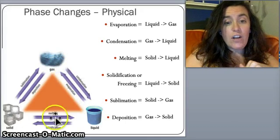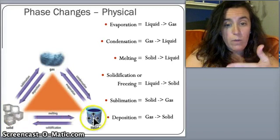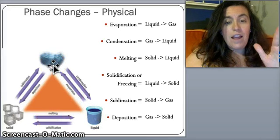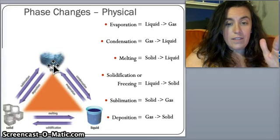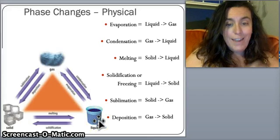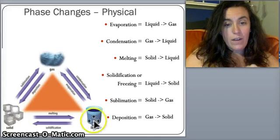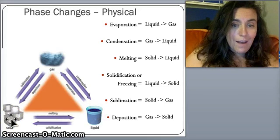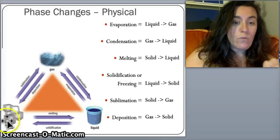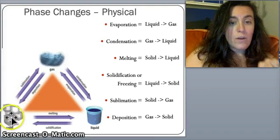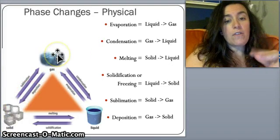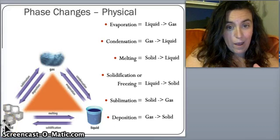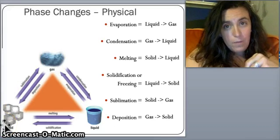To go from a solid to a liquid, we add energy. From liquid to gas, we add energy. To go from a gas to a liquid, we take energy away. Liquid to solid, we take energy away. To go from a solid directly to a gas, we have to really heat it up — add a lot of energy. Gas to solid, we take that energy away.